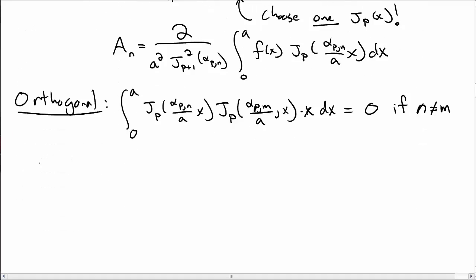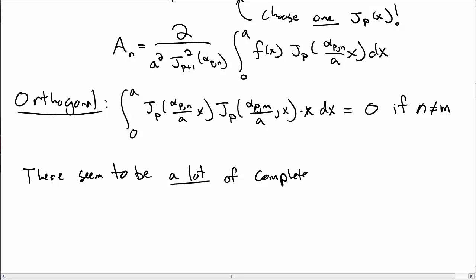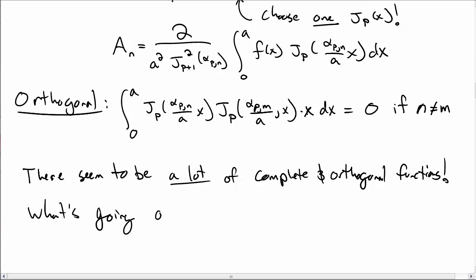We've now listed a number of special functions that share the properties of completeness and orthogonality. This might seem surprising — why are there so many? It turns out there is a general reason, known as Sturm-Liouville theory, which we'll cover in another video.